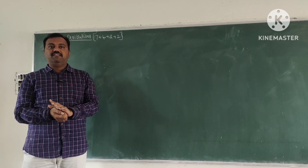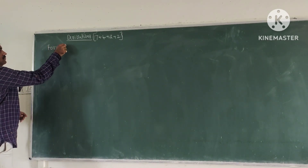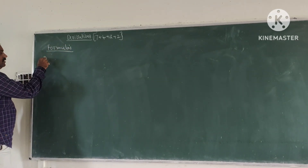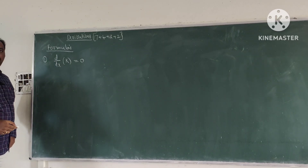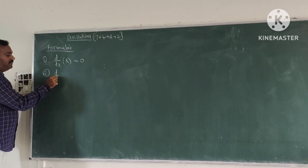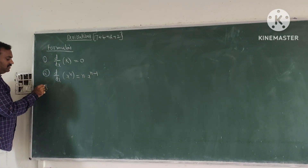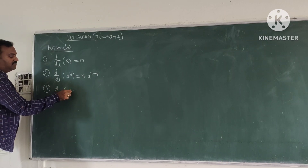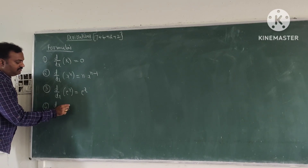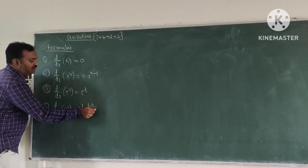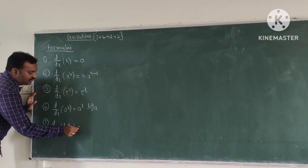The formula count is 7. First formula: D by DX of constant k is equal to 0. Second: D by DX of x power n is equal to n into x power n minus 1. Third: D by DX of e power x is equal to e power x. Fourth: D by DX of a power x is equal to a power x into log a. Fifth: D by DX of log x is equal to 1 by x.